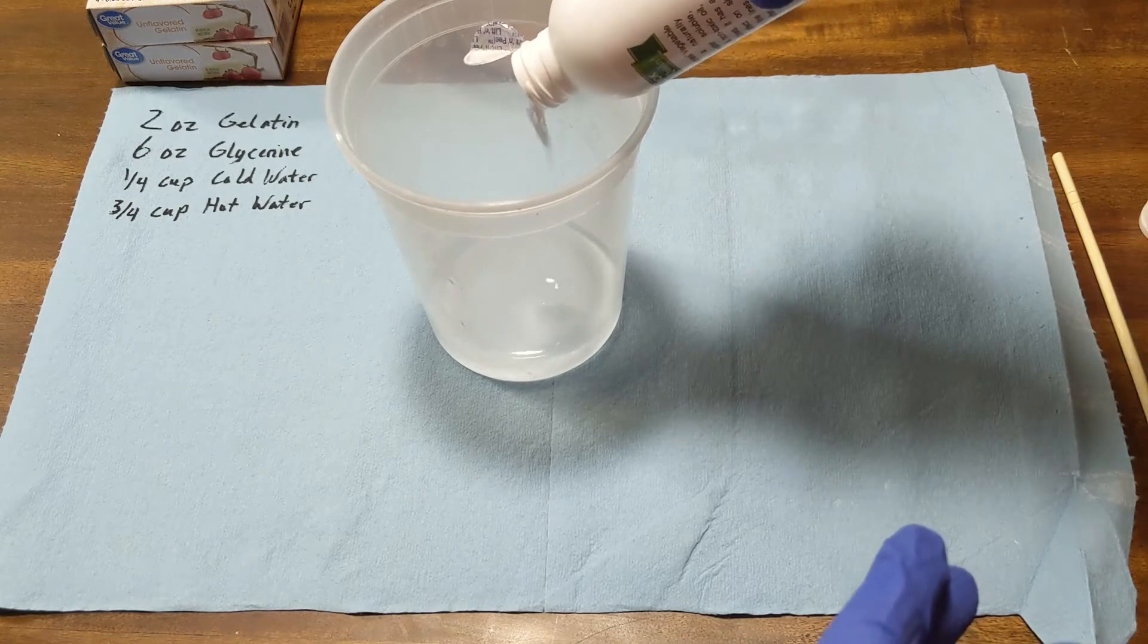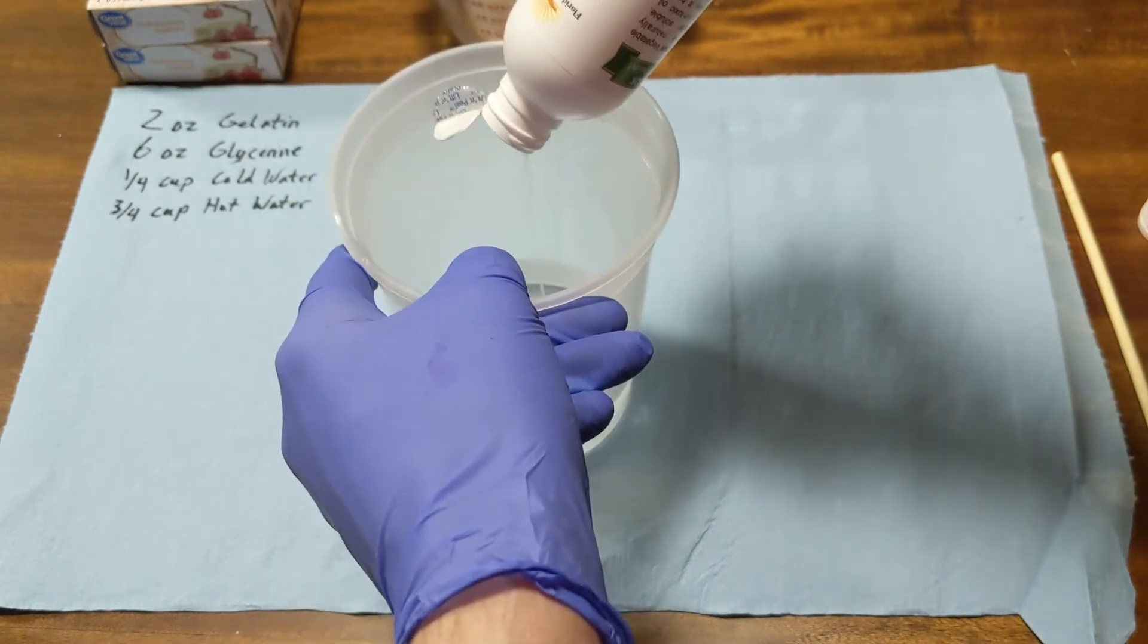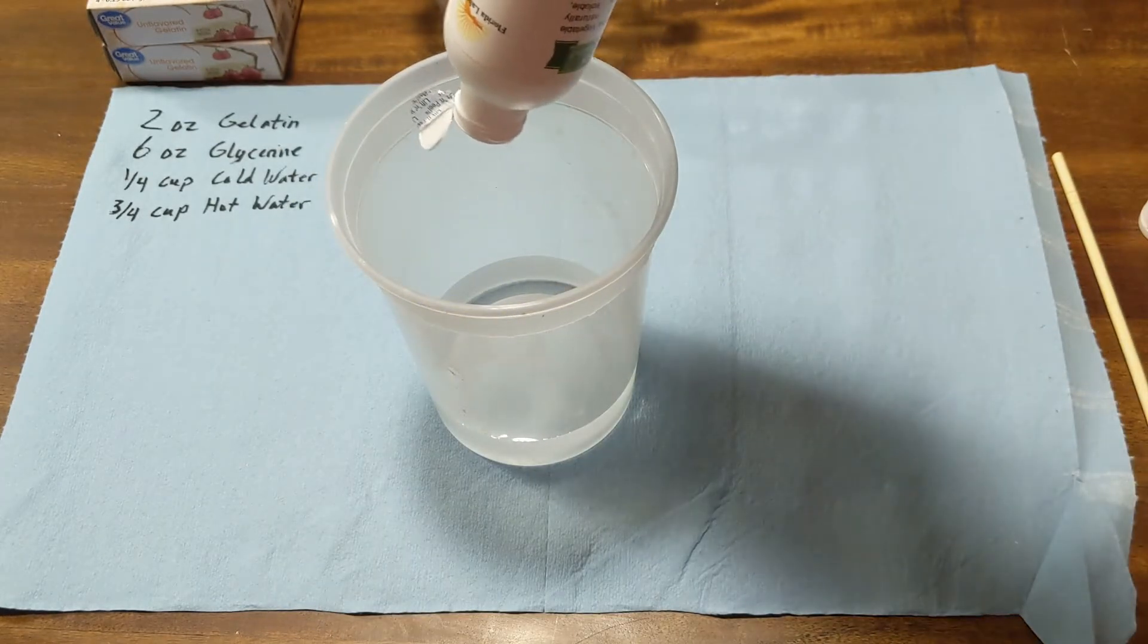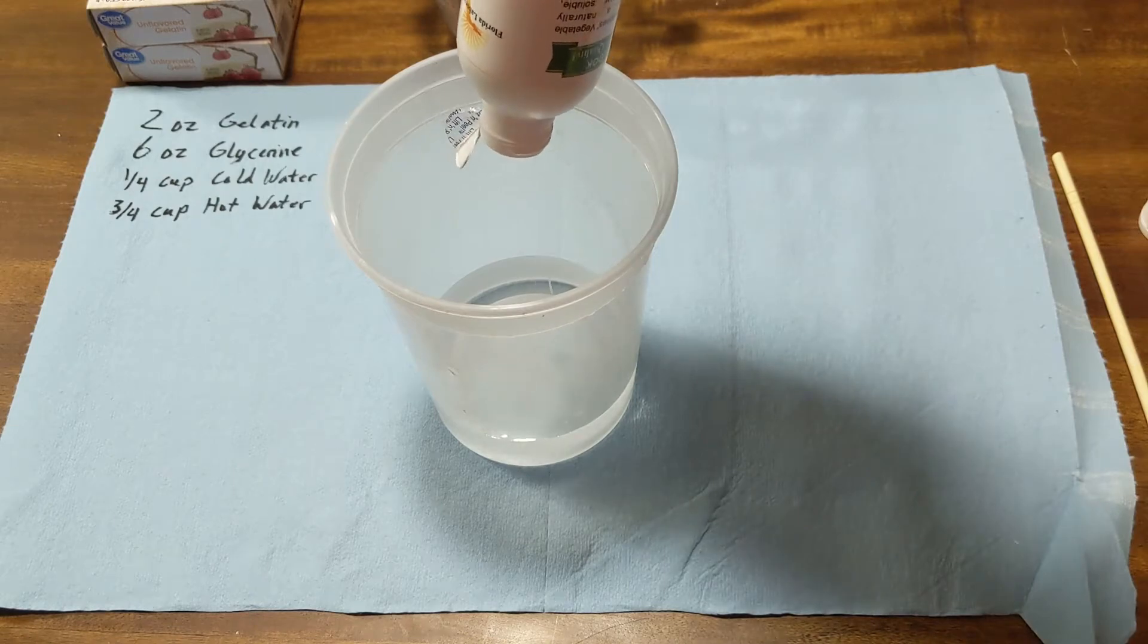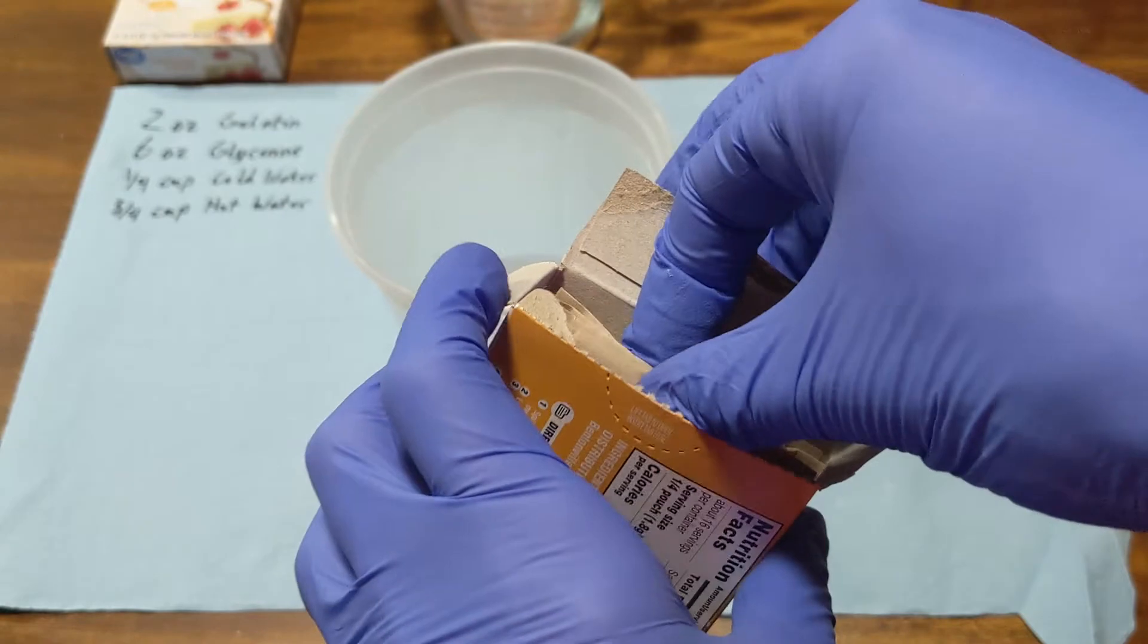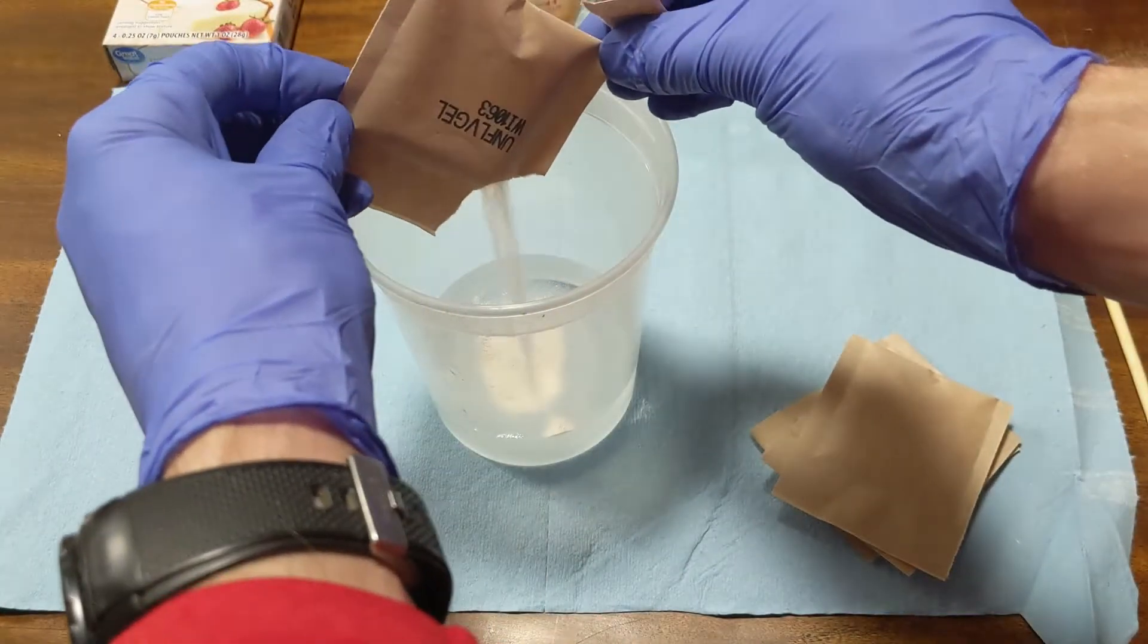I'm using about half of the recipe that he gave. I'm gonna start with my glycerin and then mix my gelatin in after that. I found that if you do it that way first, you're less likely to have clumps of the gelatin. Just make sure in this case I'm using two ounces of gelatin for six ounces of my glycerin and then my water to match.